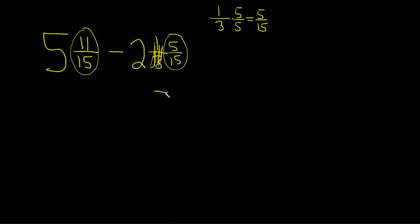So now you write them down in a column like this. 5 and 11/15 and then here we have 2 and 5/15. I'm going to draw a line like this and then I'll put a minus sign.